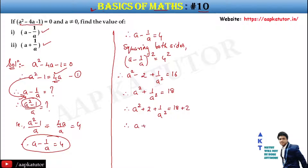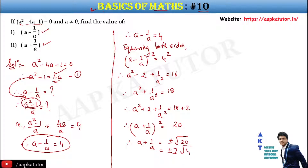Adding 2 on both sides gives us a plus 1 upon a, whole squared, equal to 20. Therefore, a plus 1 upon a equals plus or minus root 20, which is equal to plus or minus 2 root 5.